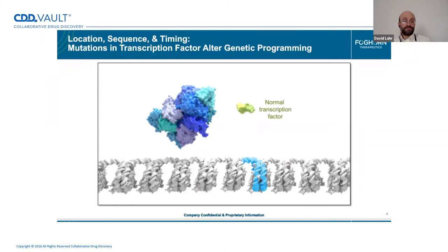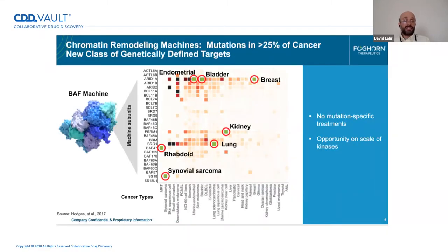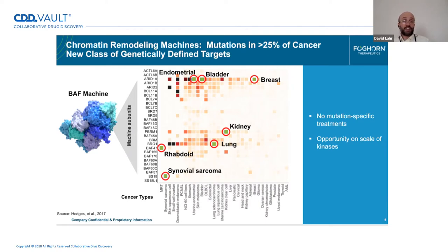To provide a sense of the opportunities in the mutation landscape, we've got a heat map where on the vertical axis we have names of genes that are part of the BAF machine — the subcomponents and individual proteins that make up the BAF complex. On the horizontal axis we have different cancer types. We've highlighted cases with an especially high rate of mutation overlap between a BAF component and a cancer type. We're not going after mutation-specific treatments — we're really going after synthetic lethalities and other opportunities.